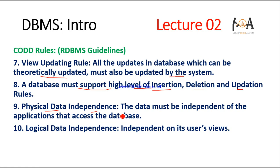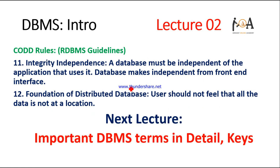The ninth rule is Physical Data Independence: data must be independent of the applications that access the database, including third-party software. The tenth rule is Logical Data Independence: the database should be independent of users' views — users see only the data they are permitted to see. The eleventh rule is Integrity Independence: the database must be independent of the front-end interface and third-party software integrity.